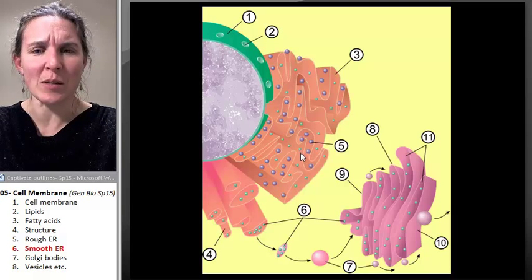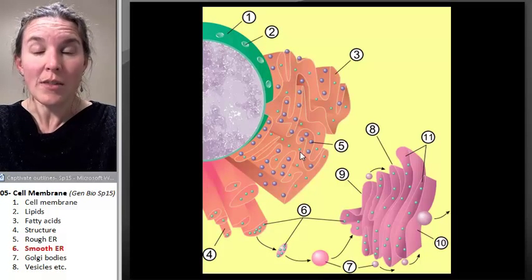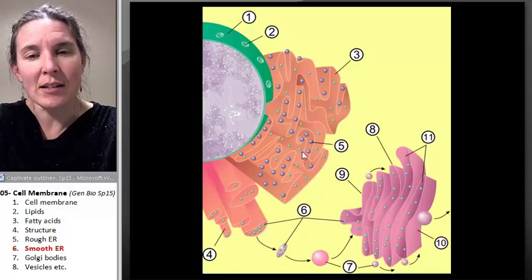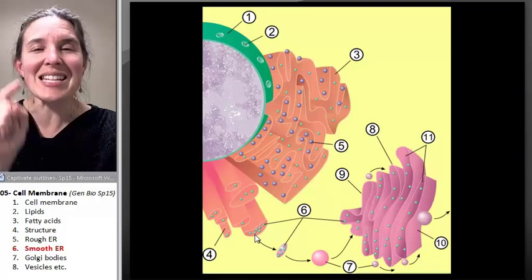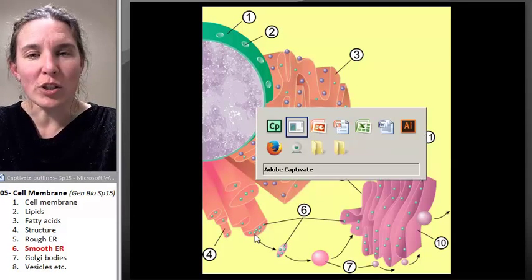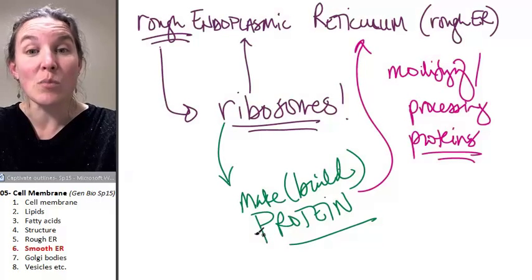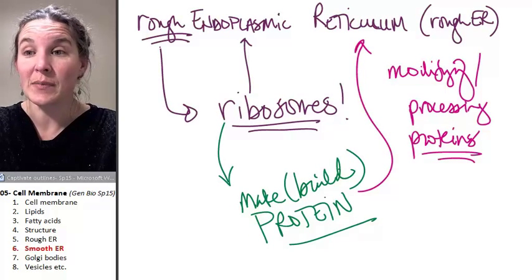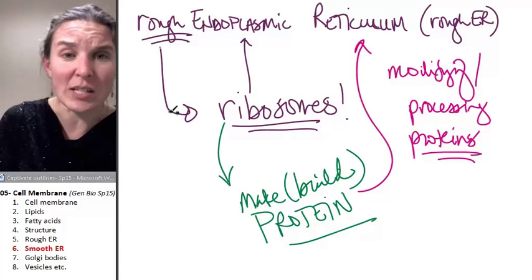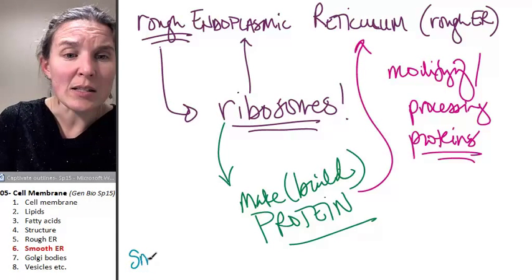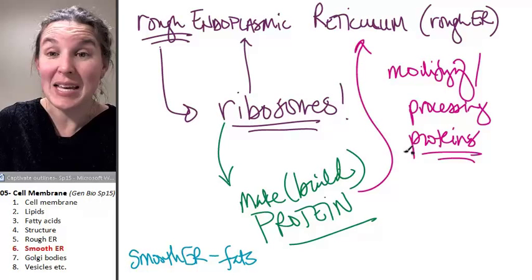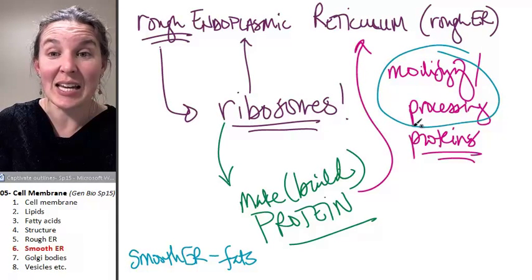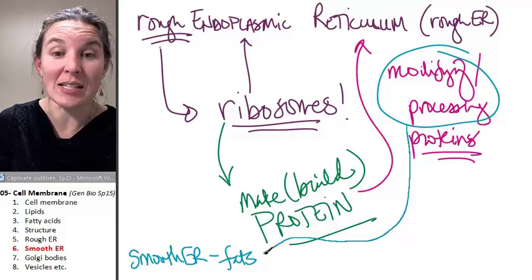What would you think they would be in the rough endoplasmic reticulum? They're proteins because proteins are being processed in the rough ER. In the smooth ER in general, the general conclusion that we can draw is that smooth endoplasmic reticulum is involved in processing not proteins, but smooth ER processes fats. So it's basically, it does this exact thing. It modifies and processes fats.